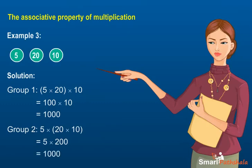As in both the groups the product is the same, we can say that multiplication is associative for whole numbers.